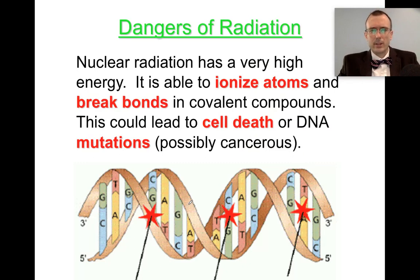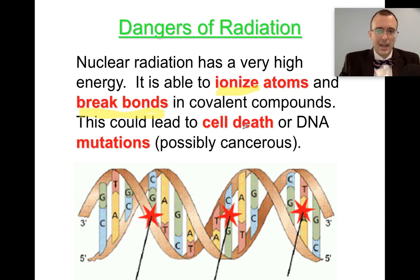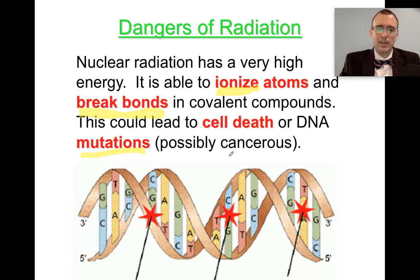Nuclear radiation is quite dangerous to the human body — it has a very high amount of energy. The main thing it does is ionize atoms, meaning it rips out electrons from atoms and in the process breaks bonds. Your body is made out of covalent compounds, so if you break enough bonds, it's going to lead to your cells dying, which could lead to your organs dying, which could lead to you dying. That's what happens with a large amount of nuclear radiation. With a small amount, it can actually change your DNA and cause DNA mutations, which might be harmless or could cause cancer in the future.